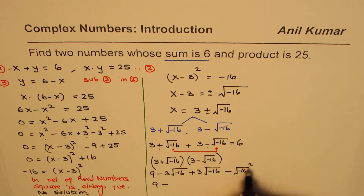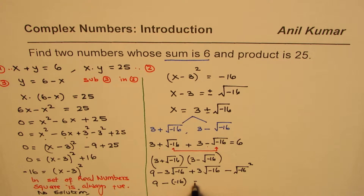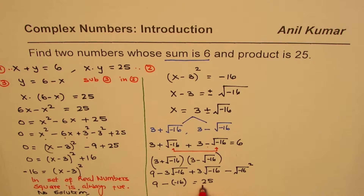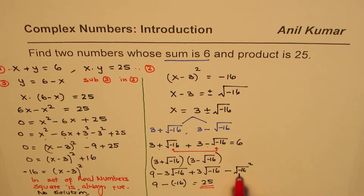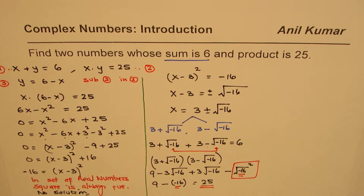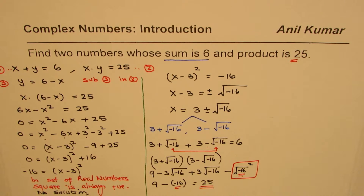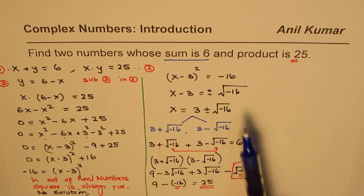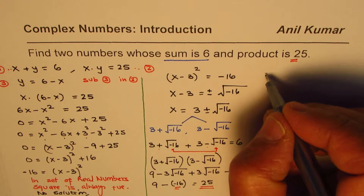Assuming we can write the square of √(−16) as −16, we get 9 minus (−16), which equals 25. I'm not saying this is a fully justified step yet, but what I'm trying to say is: if somehow the square of this number equals −16, then we do get 25. This suggests the result is not really absurd — it could make sense if we extend our number system.